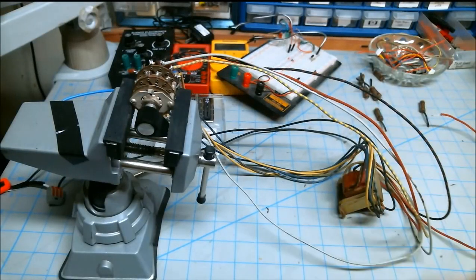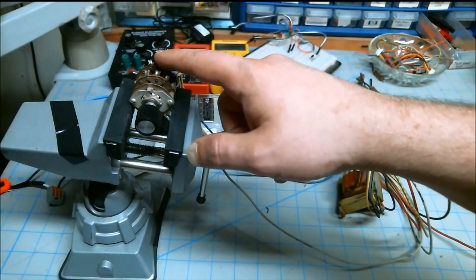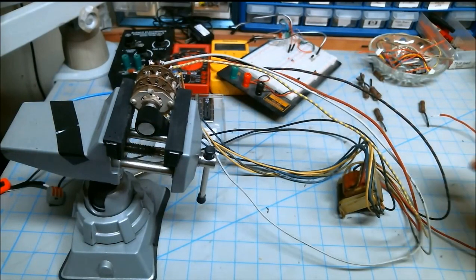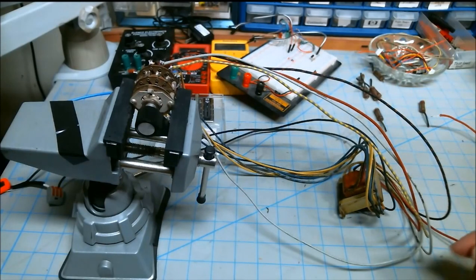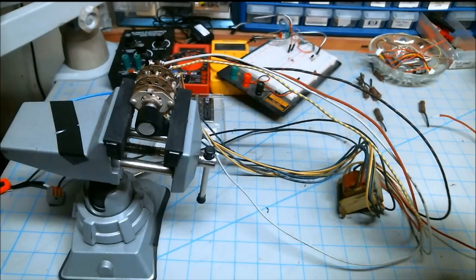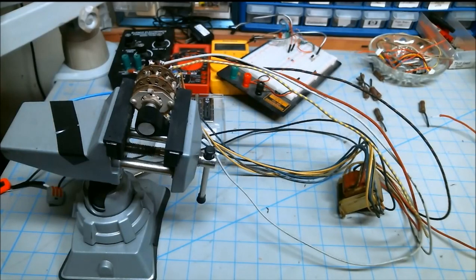I don't have a variac. I built myself a variable AC output using a 10 position switch and a transformer with four secondaries. And each of those secondaries has a center tap.